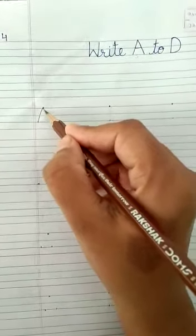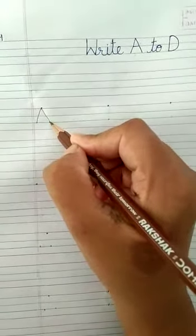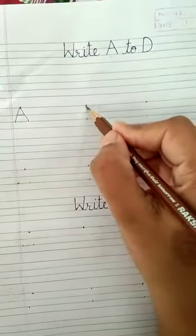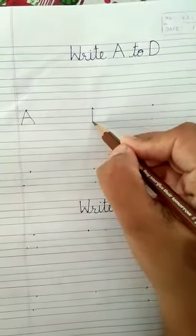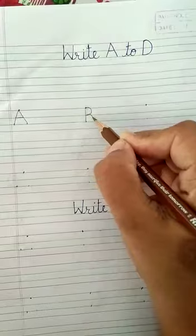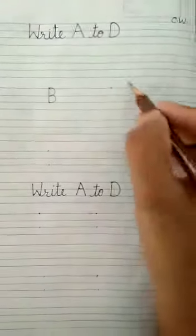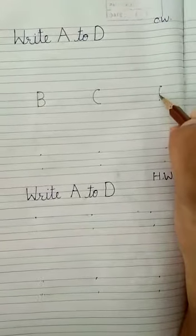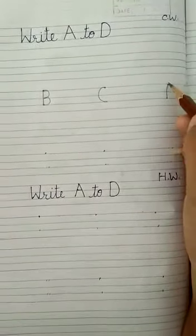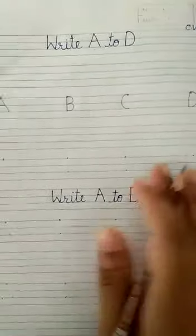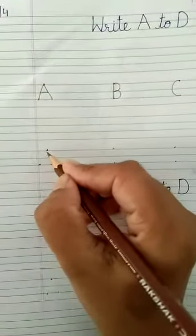A: slanting line, slanting line, slanting line. A. Standing half circle, half circle. B. Half circle. C. Standing half circle. D. Write again.